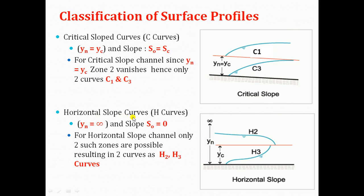Horizontal slope curves, also called H curves, occur in horizontal slope channels where the normal depth is infinity and S0 equals 0. For horizontal slope channels, only two zones are possible, resulting in two curves. Since normal depth is infinite, zone 1 is neglected. H2 curve occurs when the depth of flow is above the critical depth. H3 curve occurs when the depth of flow is less than the critical depth.